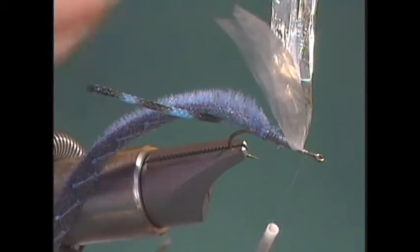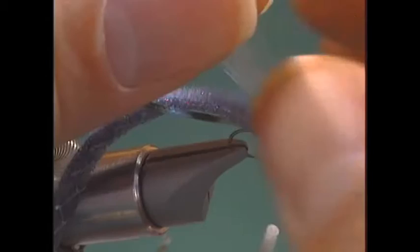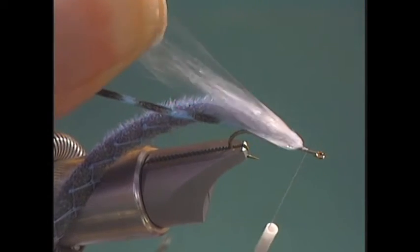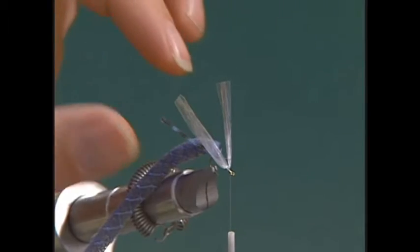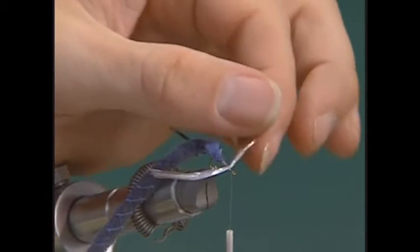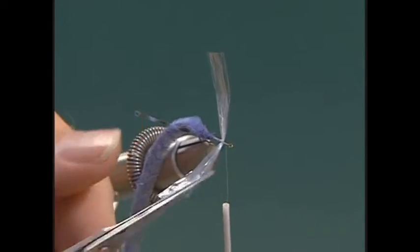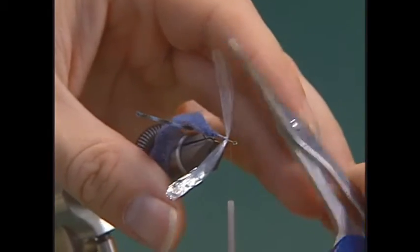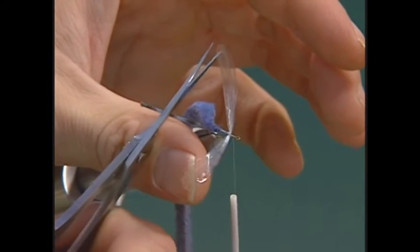Now before we go any further, I'd like to trim my wings now, or you can do it later, whatever you prefer. I'll bring them all together, lay them back, and I come in and trim them to about three quarters of the length of the body here. Now I'll just kind of round them off a little bit, just make it look a little bit more like the natural.